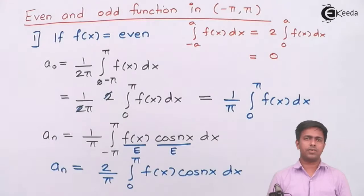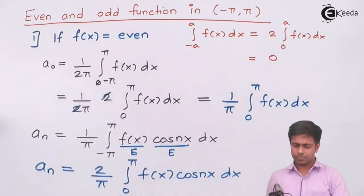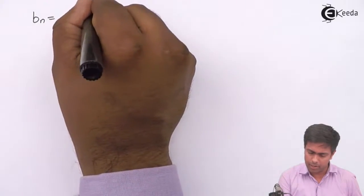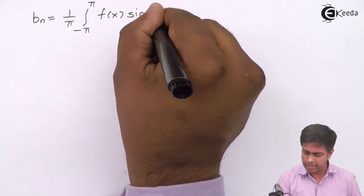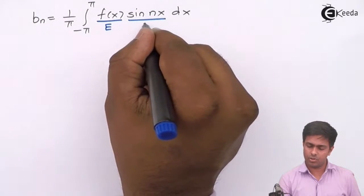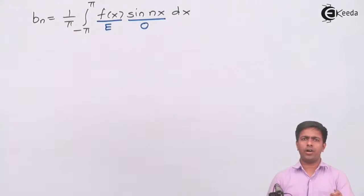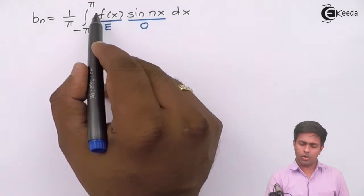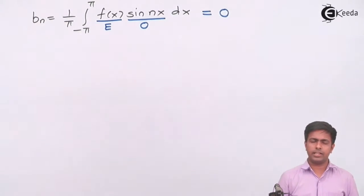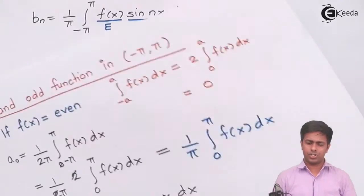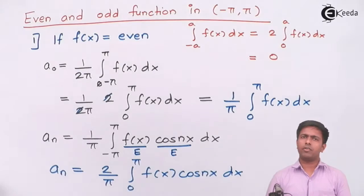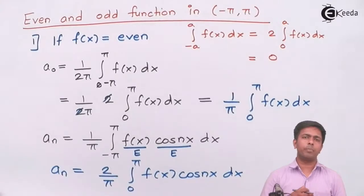Now for bₙ: the general formula is (1/π) times the integration from negative pi to pi of f(x) sin(nx) dx. Since f(x) is even and sin(nx) is a universally odd function, even multiplied by odd gives an odd function. By the property of definite integrals over a symmetric interval, the integral of an odd function from minus a to a equals 0. Therefore bₙ = 0. So when f(x) is even, we find a₀ and aₙ using the new formulae and directly set bₙ = 0.